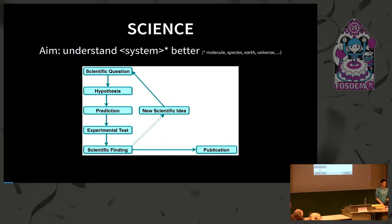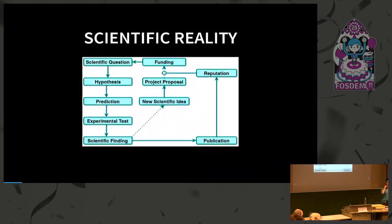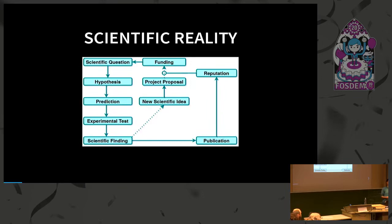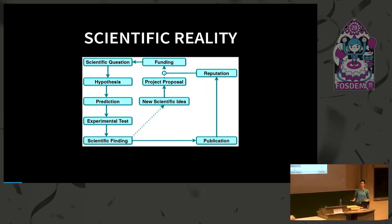This is not the whole truth — science needs to think about money at some point. To answer your scientific question, you need funding for your team, which comes from writing a project proposal. This gets evaluated, and if good, you get the funding. A big aspect of this process is the reputation of the respective scientists, and for this, publications are essentially the currency in science.